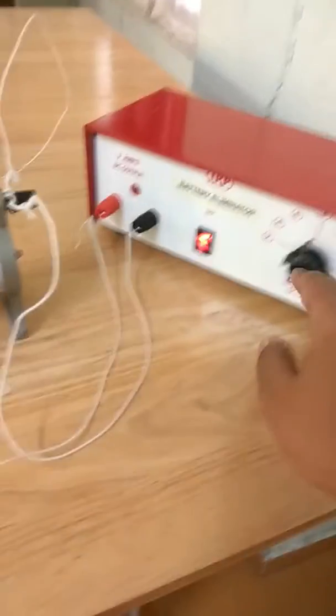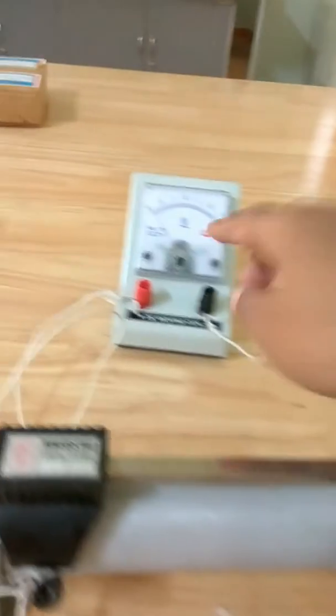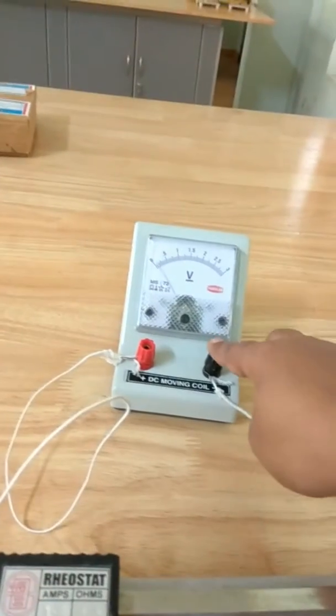Now I have taken an eliminator and I have set the voltage to 2 volts. And there is a voltmeter which is connected in parallel, and the range of this voltmeter is 3 volts.